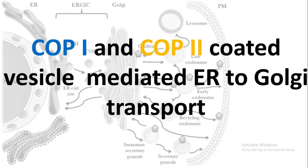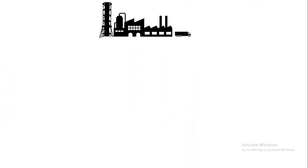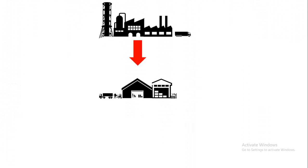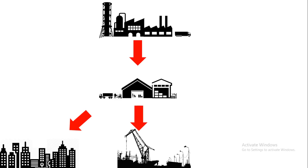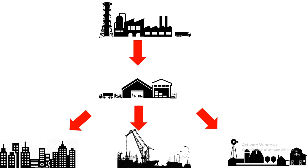The products that are formed in a factory need to be stored and sorted out in a warehouse. From the warehouse, the product may be delivered to a city, a dockyard, a village, or different locations. Similarly, inside our cell there is a production factory, there is a warehouse, and there are several demanding places where the products of the factory should be delivered.